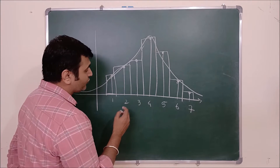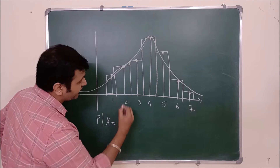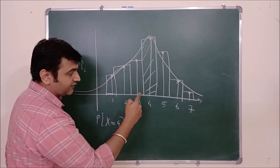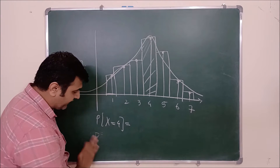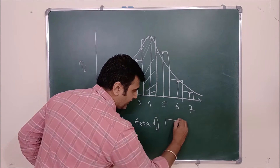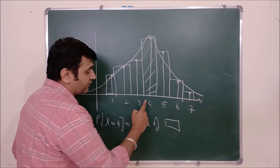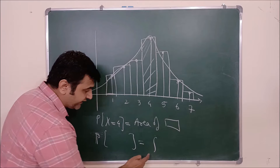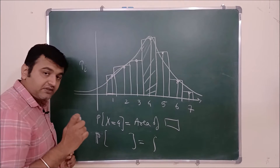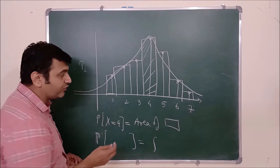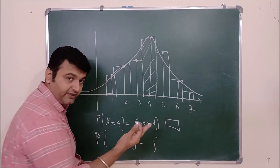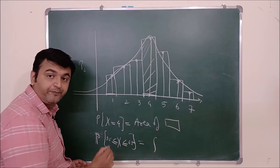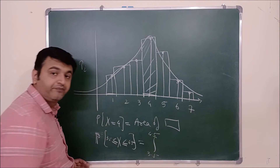Now if I want to find the probability that X takes the value 4, I know it is the area of this rectangle. This was by the binomial distribution. But if I want to take the help of the normal distribution, that means I will integrate. I can't integrate from 4 to 4, because for a PDF the probability for a single value is always zero. So what I do is: since this is 4, you go half a point back and half a point ahead — that is how you get the rectangle. So you take the range of x from 3.5 to 4.5 and integrate the PDF from 3.5 to 4.5.